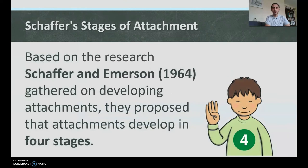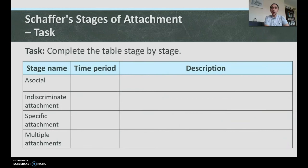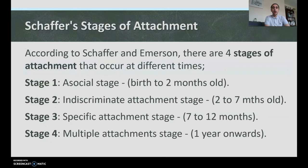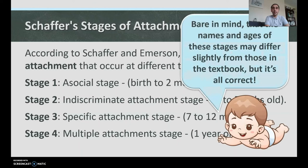Based on the research Schaefer and Emerson gathered, they proposed that attachment develops in four stages. According to Schaefer and Emerson there are four stages at different times: stage one, the asocial stage, birth to two months; two, indiscriminate attachment, two to seven months; three, specific attachment, seven to twelve months; and four, multiple attachment, from one year onwards. Note that names and ages may differ slightly from your textbook but are all correct.